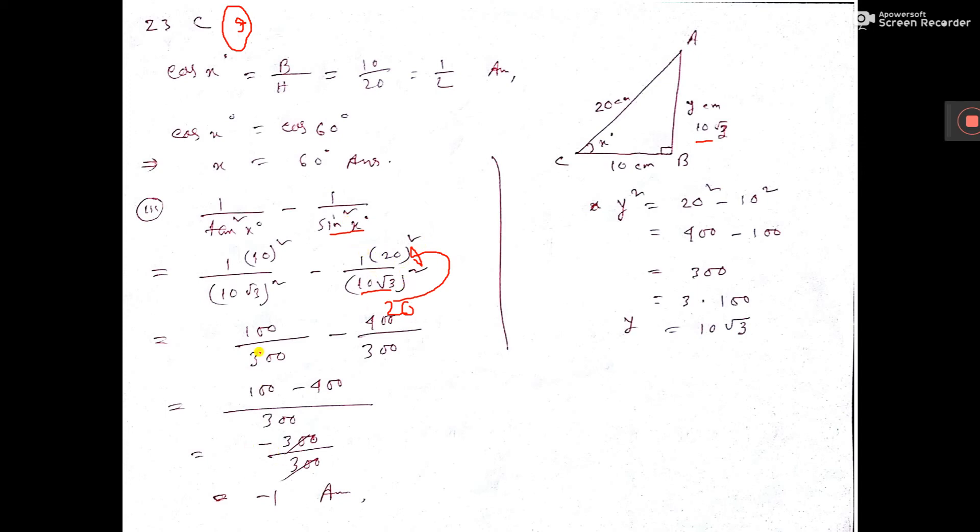Now 10 square is 100. 10 square is 100 into root 3 into root 3, 3. So 3 into 100 is 300. 20 square is 400. 10 into 100 into 3, that is 300. Now take LCM 300. 100 minus 400, that is minus 300. So this, this cancel, minus 1 is the answer. That's all.